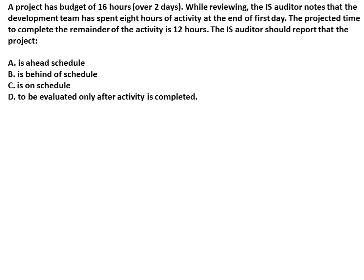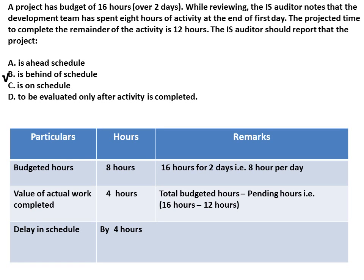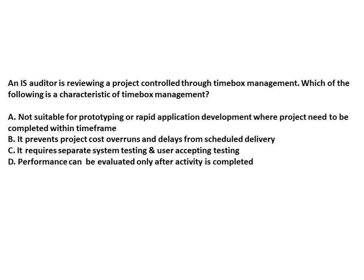EVA calculation example: A project has a budget of 16 hours spread across two days. The IS auditor notes the development team has spent 8 hours of activity at the end of day one, but 12 hours of activity still remain pending. The IS auditor should report that the project is behind schedule. At the end of day one, 8 hours of activity should have been completed, but the actual value of work completed is only 4 hours (total budgeted hours minus remaining hours). Therefore, activities are delayed by 4 hours.